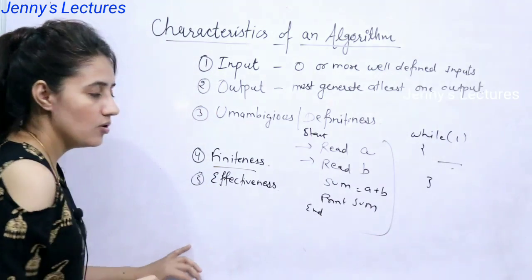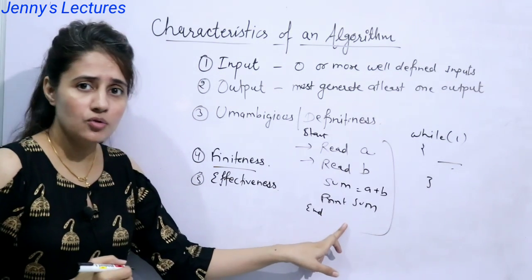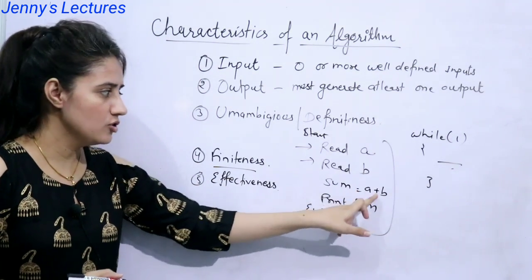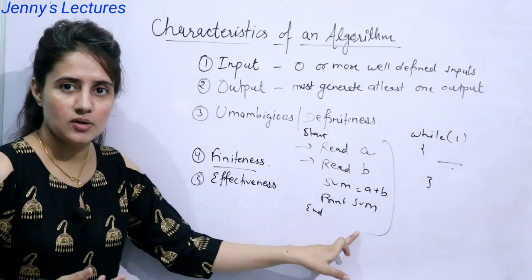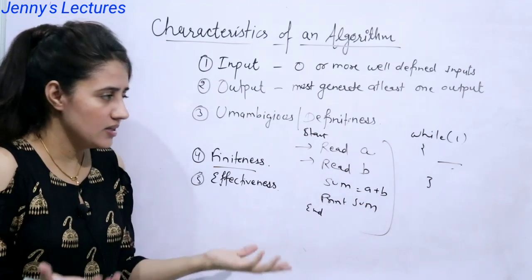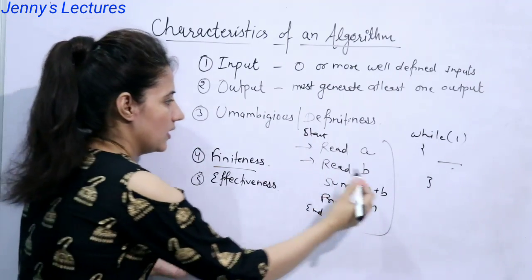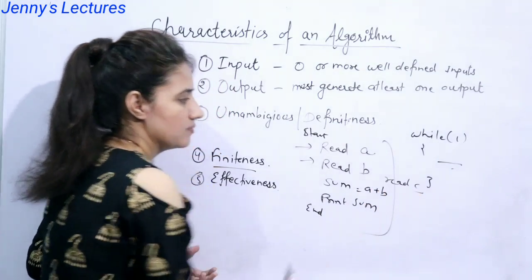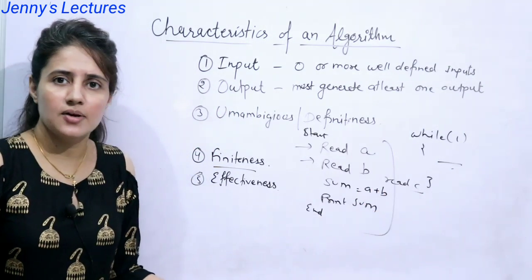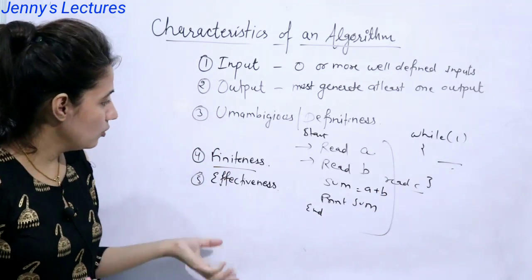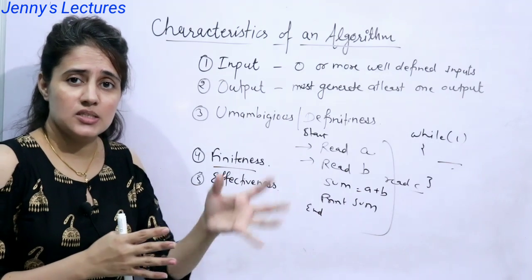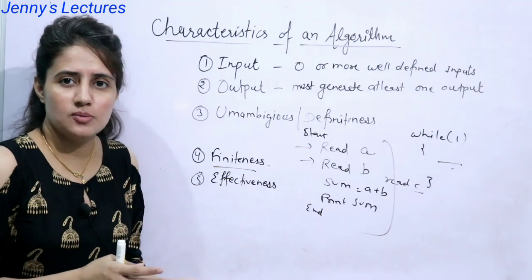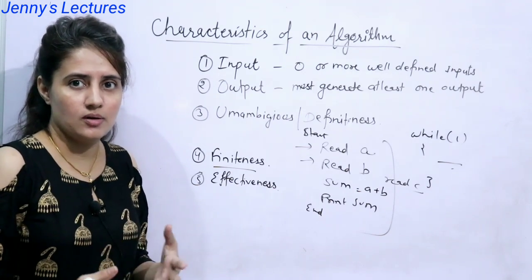So this output of this algorithm would be obviously the sum of these two numbers. It is effective and it is not containing any unnecessary statements like I'm not writing here read C because I'm not using C anywhere. And one more point you can also add like every statement, every instruction in that algorithm must be feasible. It shouldn't be imaginary.